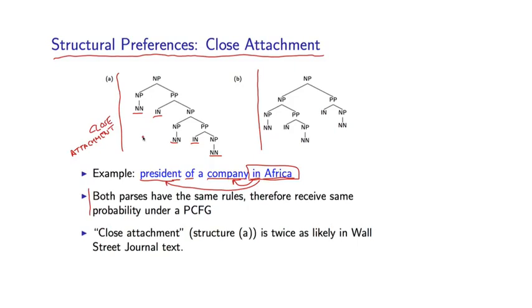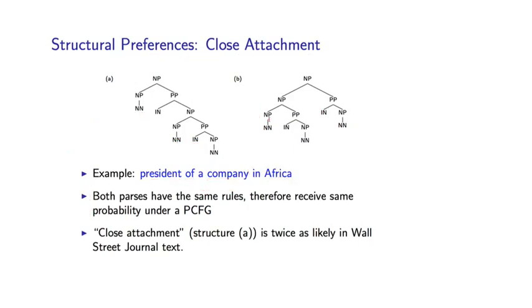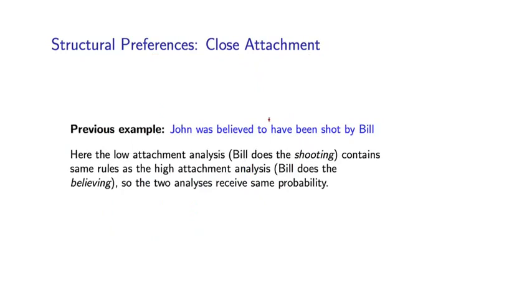And therefore, again, receive identical probability under a PCFG. And so the PCFG fails to distinguish between these two things. But if you look at the statistics, this first structure, close attachment, is significantly more frequent than the second structure. It actually occurs about twice as often as the second kind of structure. So even before you look at the words, there's a fairly significant structural bias for these kind of close attachments as opposed to these further attachments.